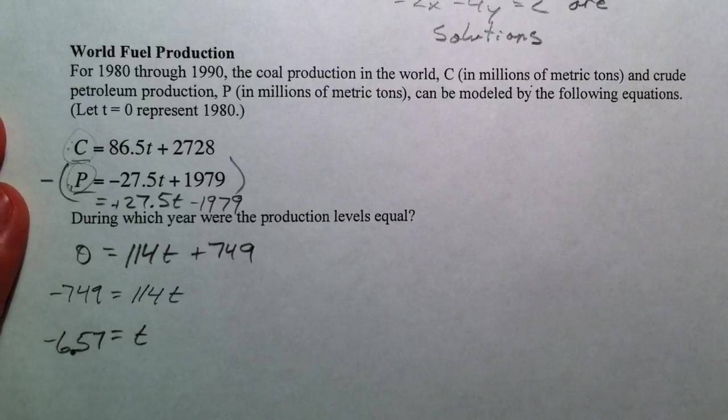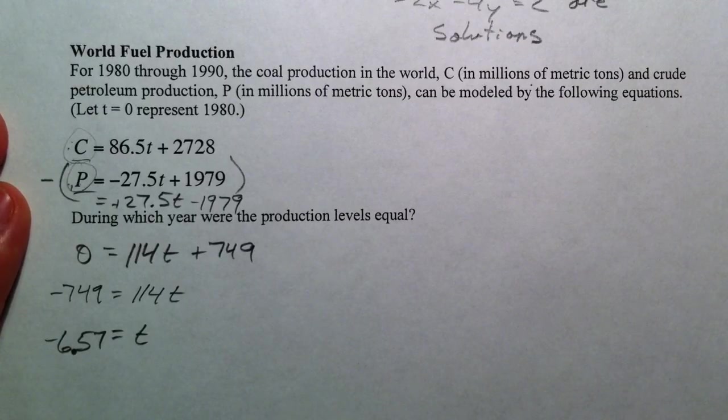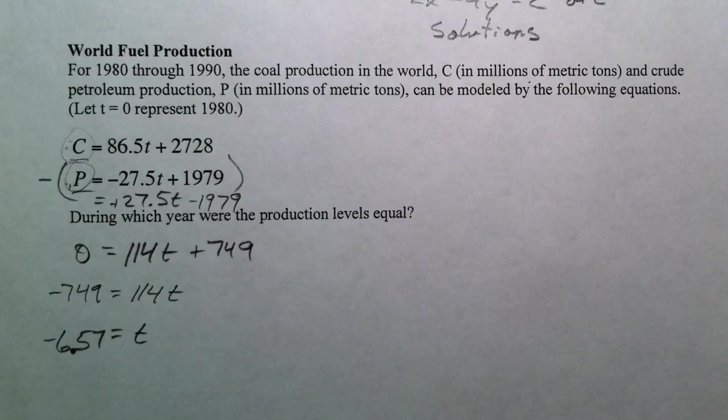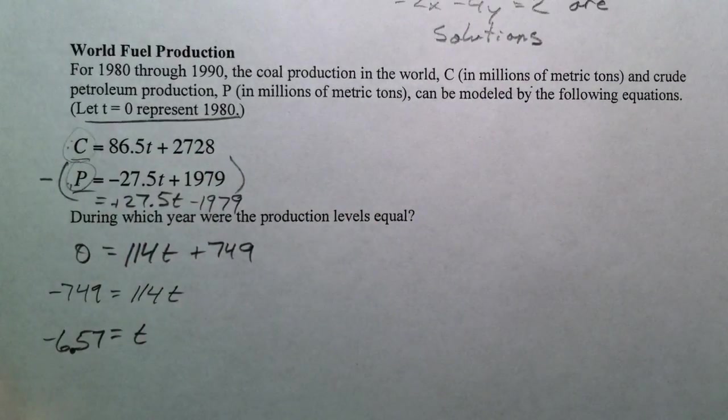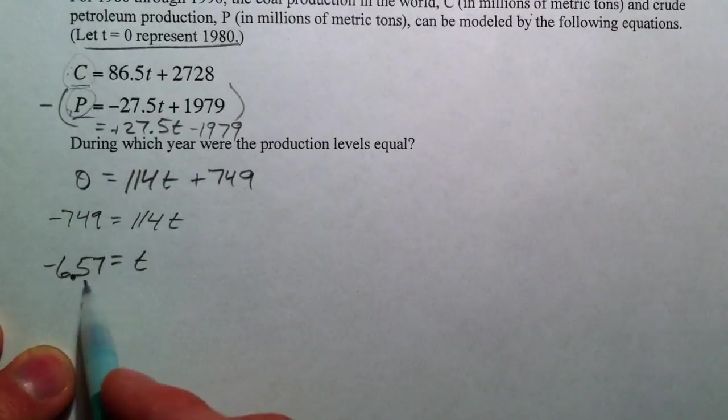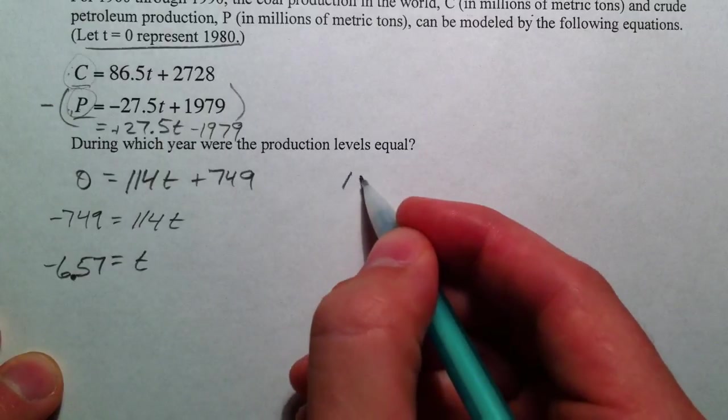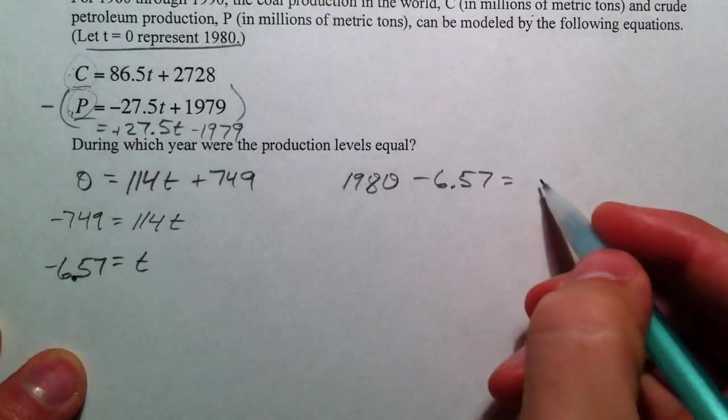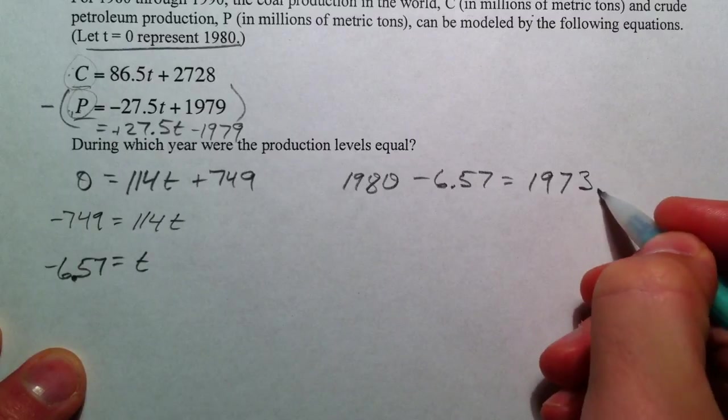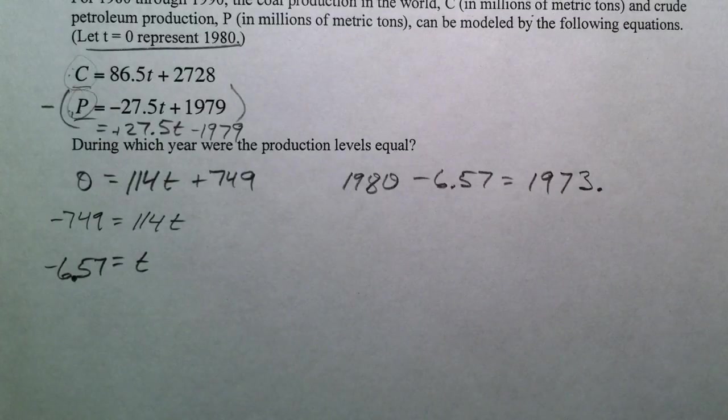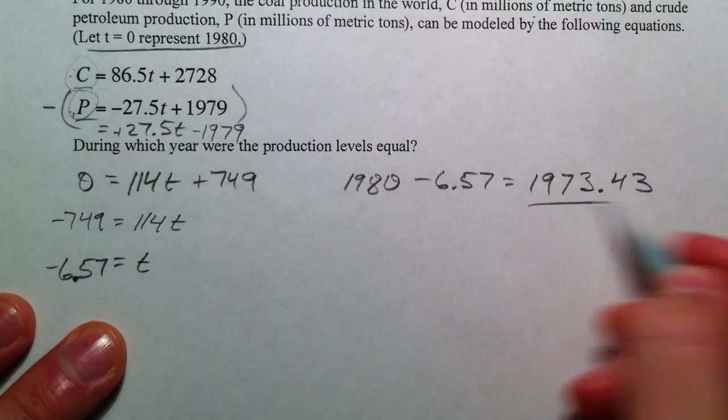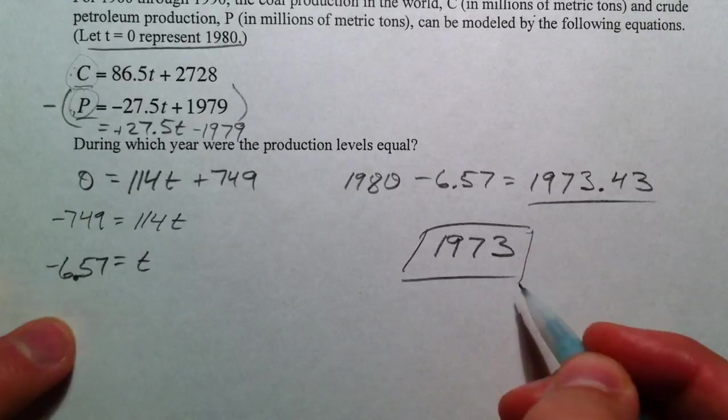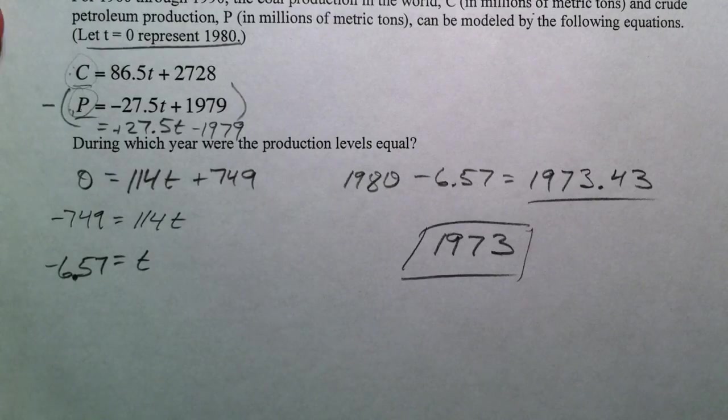And so, if you go back to this equation, t equals 0 represents 1980. If they were the same at negative 6.57, 1980 minus 6.57 is going to be 1973.43. And so, 1973 is when they were equal. Congrats and happy solving systems algebraically.